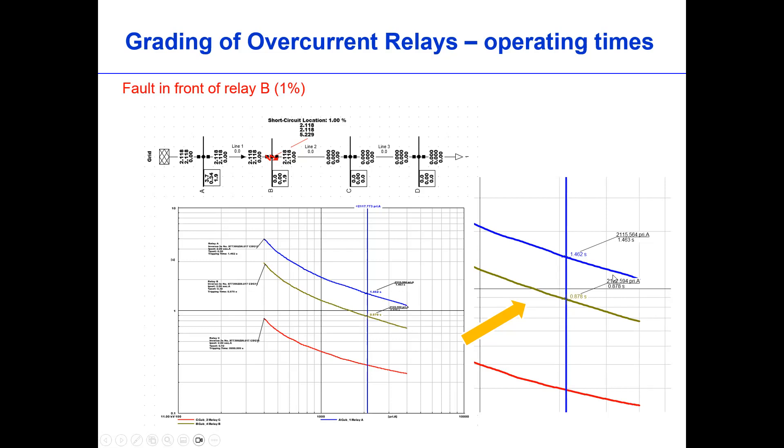What about when the fault is at B? When the fault is at B, again, relay B is the primary relay, so it trips, and relay A provides a backup. Let's have a look at the enlarged one. Relay B tripped at 0.87 second, and then relay A provides a backup. But as you can see, relay C is not tripped because the fault is on the upstream side of this relay, so that there is no fault current on here. Relay B tripped first, and then relay A provides backup, still grading 0.7 seconds. Usually grading time is around 300 milliseconds or 0.2 seconds, but this is just intentionally around 700 milliseconds.